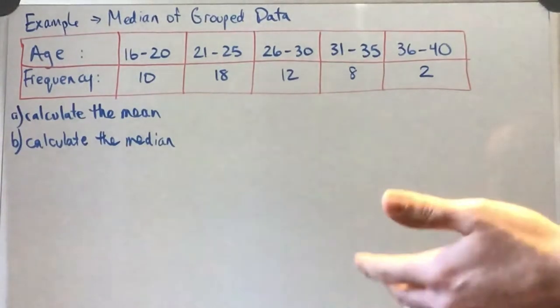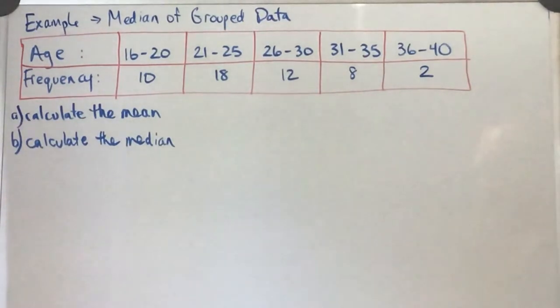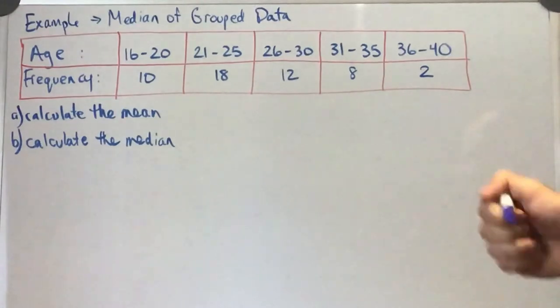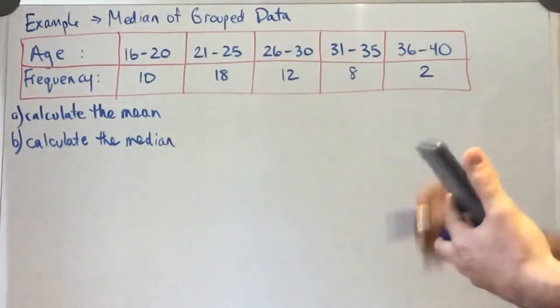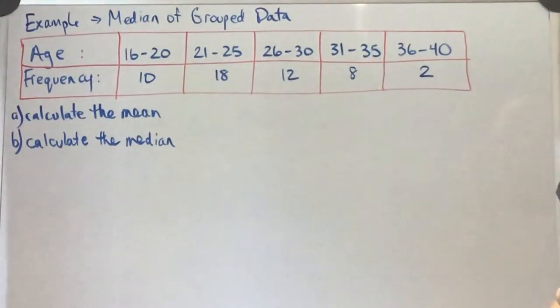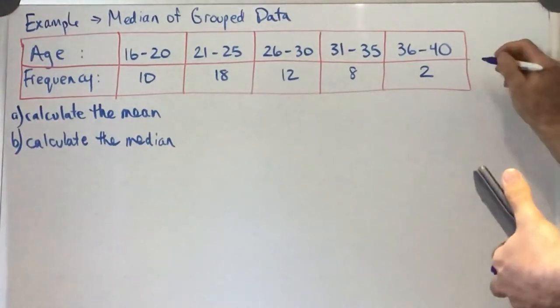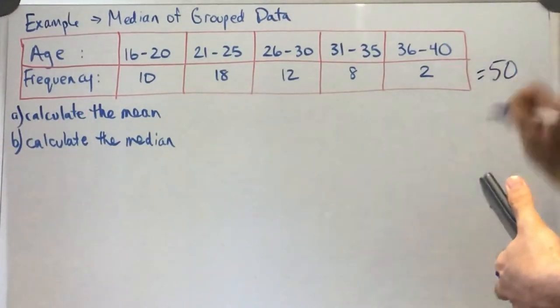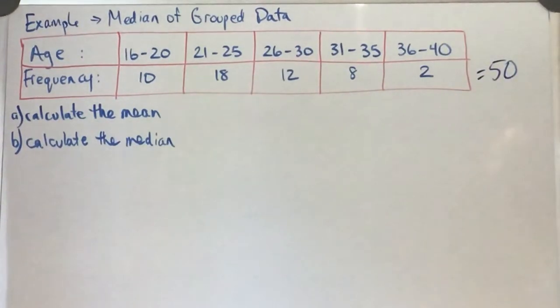So when calculating the mean, the first thing we need to do is tally up the total frequency. So if we add these up, we have 50 total people who were surveyed or this data was collected from.